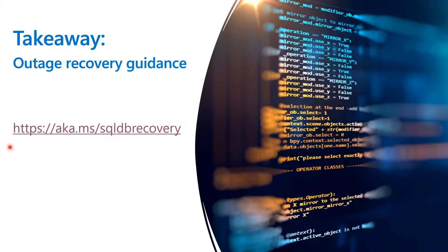There's one more link I want to share. We have also published prescriptive guidance on what customers should do in the event of an outage, so you are well prepared. What's the flow? You start from where do you look at an outage, then what do you do during an outage — you start with a failover, which is no data loss, and then eventually upgrade that to a forced failover where there's some amount of data loss. This link takes you right to that document page.